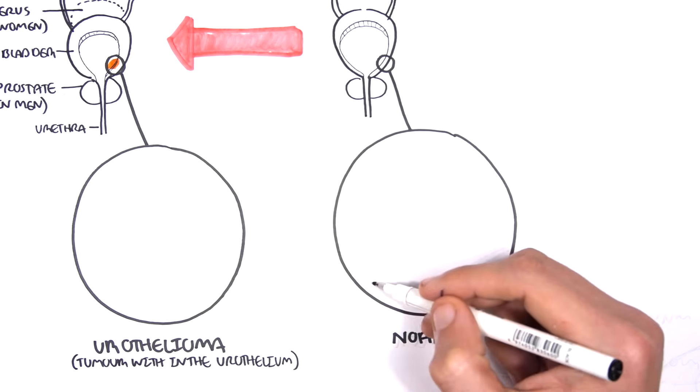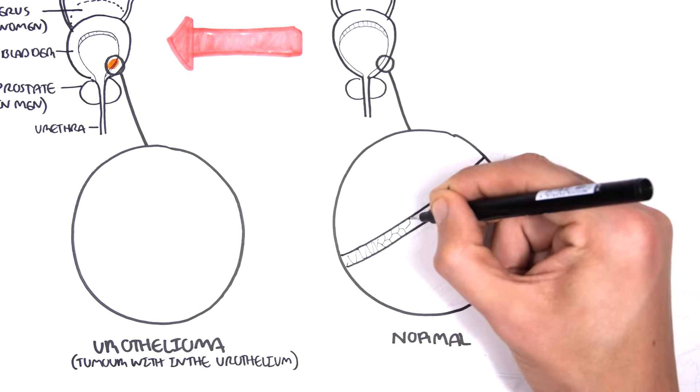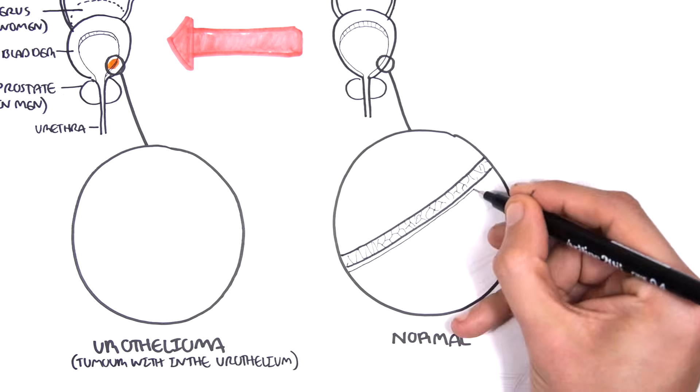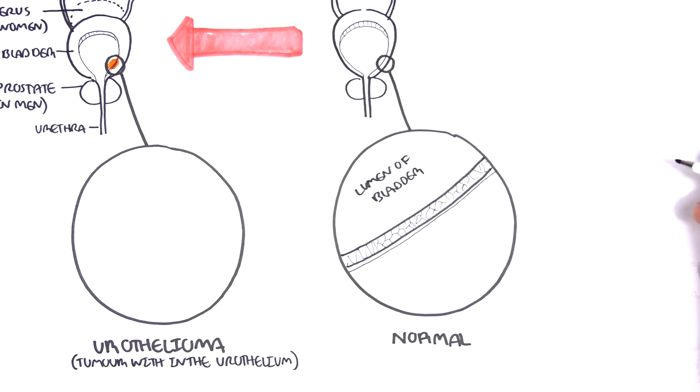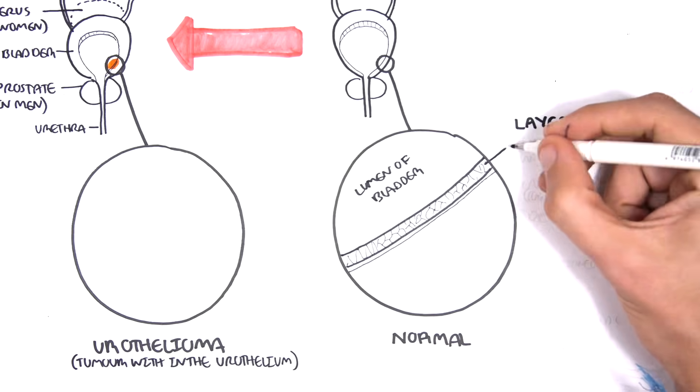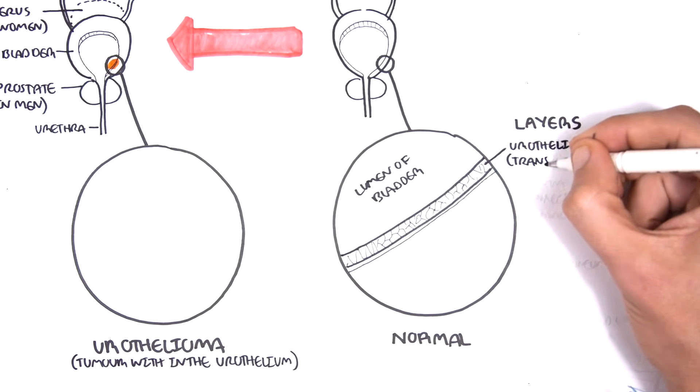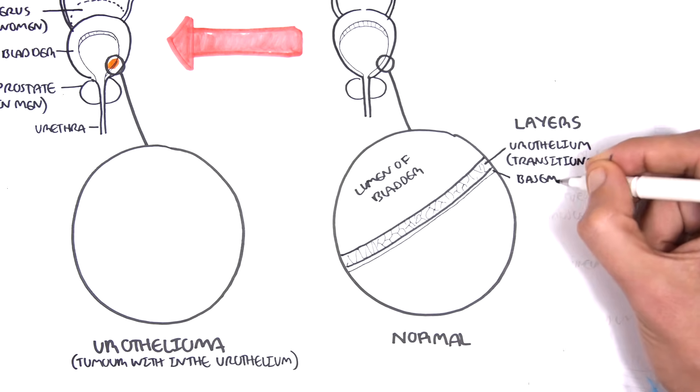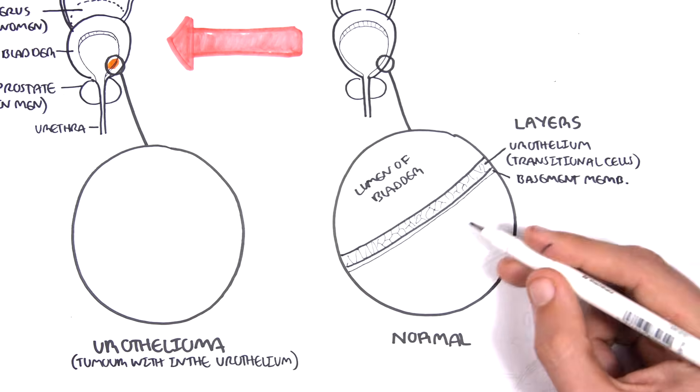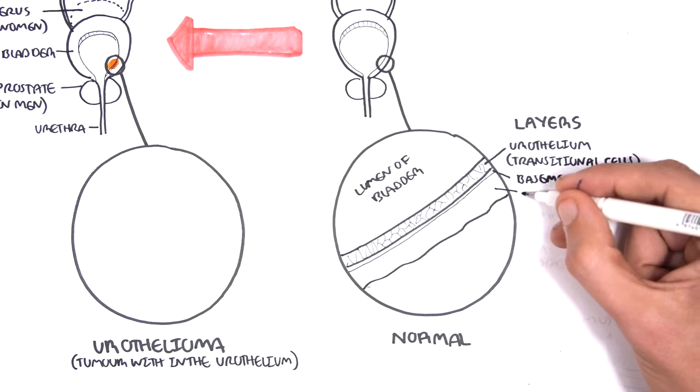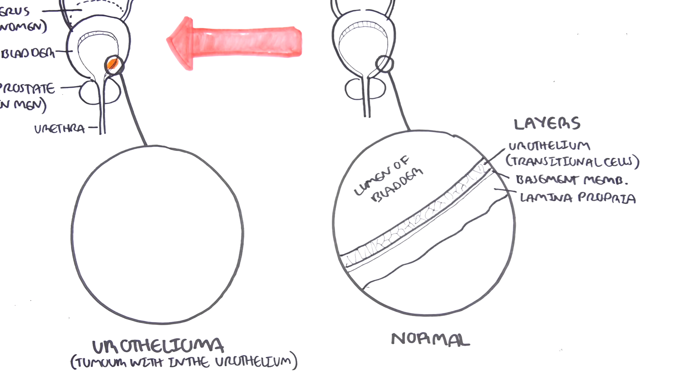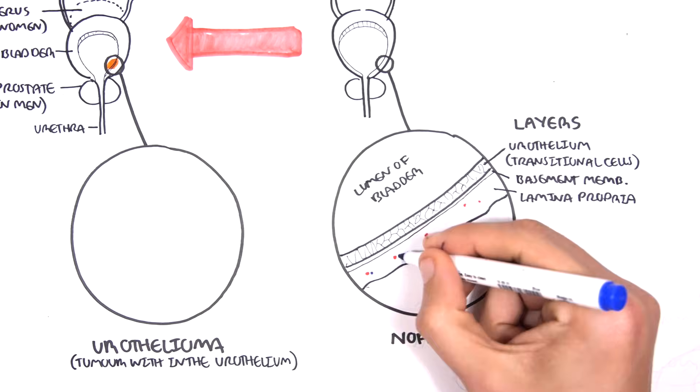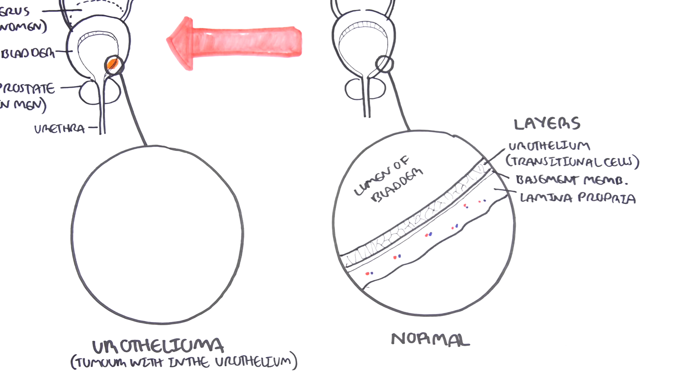So let us look at the layers of a normal bladder. This is the lumen of the bladder where urine is stored. The inner layer of the bladder is called the urothelium, and it is made up of transitional epithelial cells. Below it is the basement membrane, which separates the transitional cell epithelia with the lamina propria.